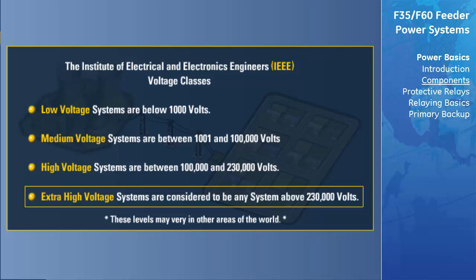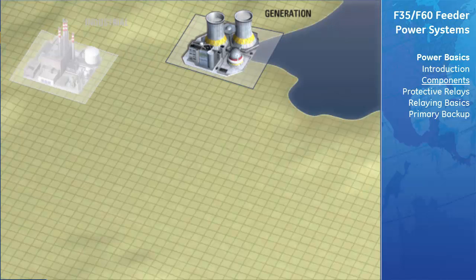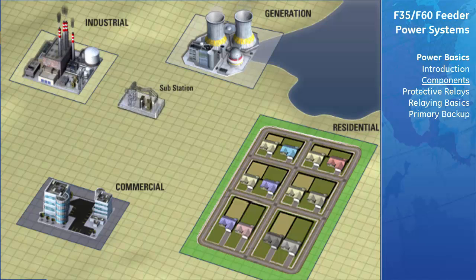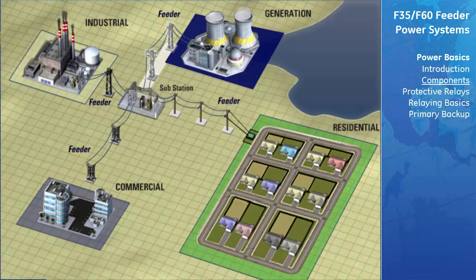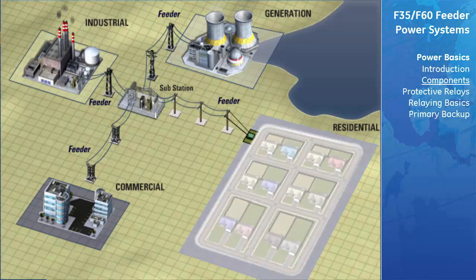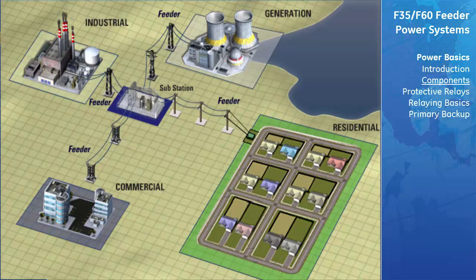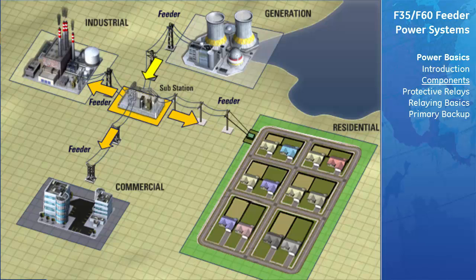The voltage levels may vary in different parts of the world, but the names of the classes for the most part remain consistent. Three-phase power travels from the generating station over high power lines to substations. Different voltages are required for residential, commercial, and industrial customers, and so at substations, breakers and transformers route and step down the voltage to a suitable level for distribution.